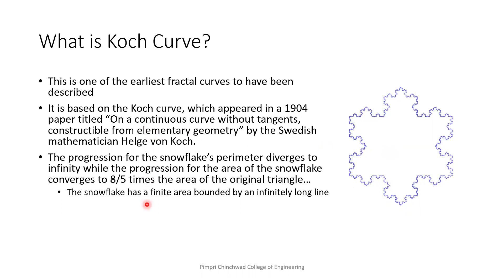This is one of the earliest fractal curves to have been described. The mathematics behind this Koch curve first appeared in a paper titled 'On a continuous curve without tangents, constructible from elementary geometry' by the Swedish mathematician H.P. Koch. And it was in the year of 1904, more than 100 years back.